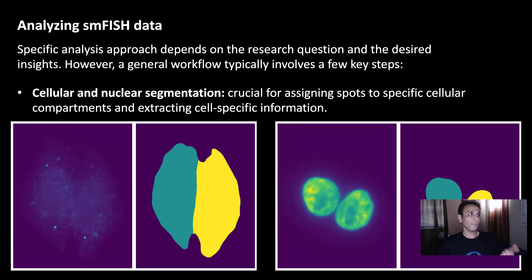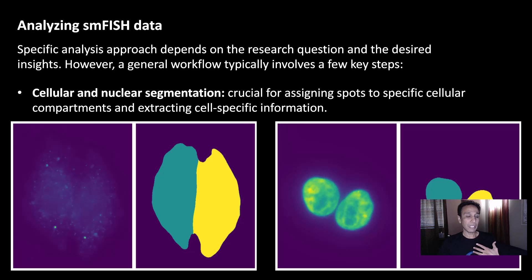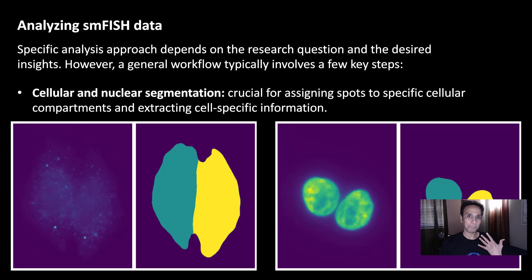Once the spots are detected, you also need to segment the cells and nuclei. Typically you also have the sample stained with DAPI, so you can easily detect and segment the nucleus. In some cases you may not have the full cell context, as cells can be difficult to detect depending on sample preparation. But usually with DAPI, you can clearly detect where the nucleus is and count spots within it.